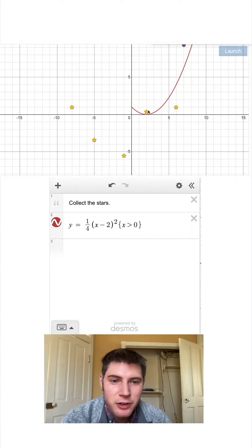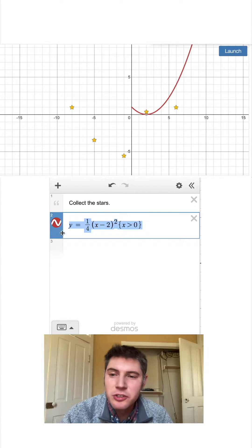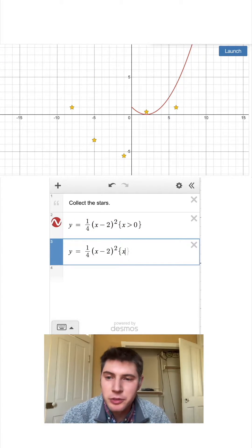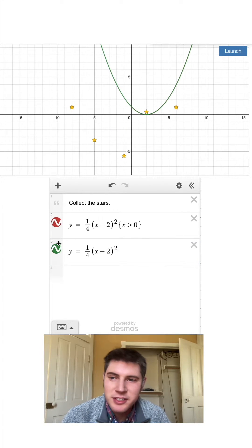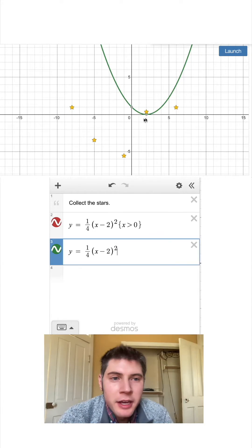How do we get behind it? Let's duplicate it and make a new one without a restriction. Now this green one has extended it out all the way, and I want to use this green one to get the other stars.